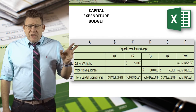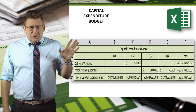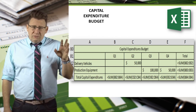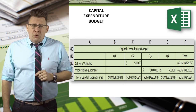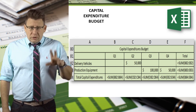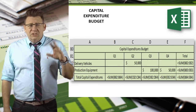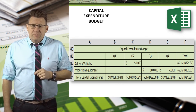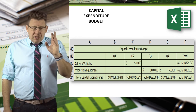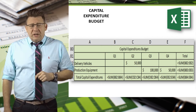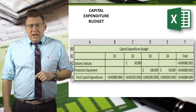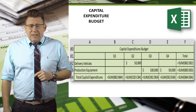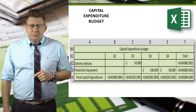Here you can see I just entered the assumed amounts into some random quarters. We will use Excel to sum the quarterly expenditures and the total expenditure by project type.